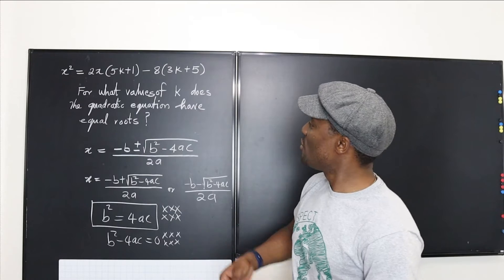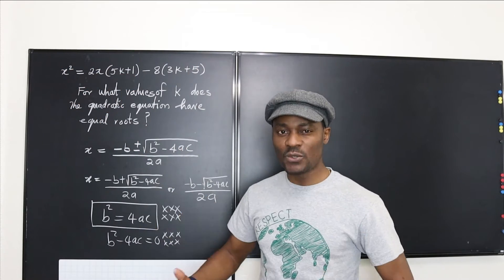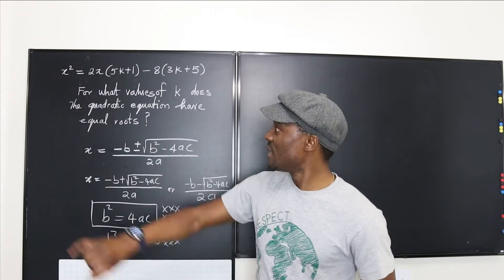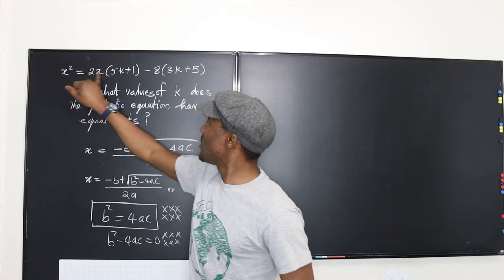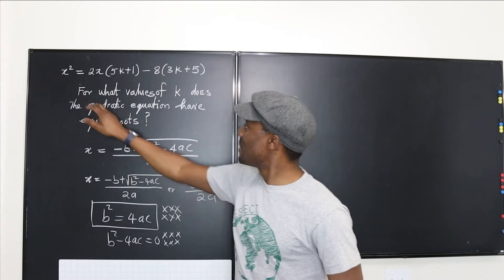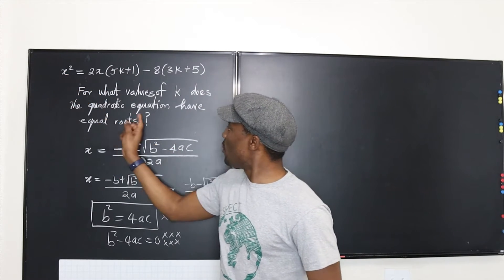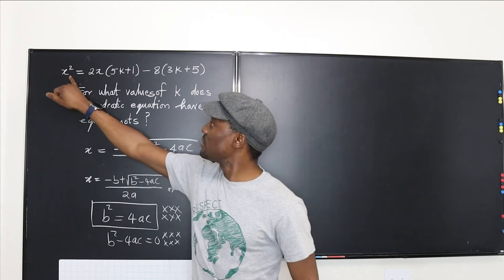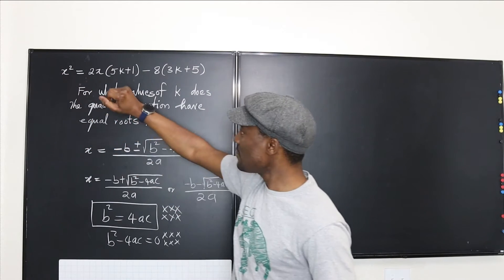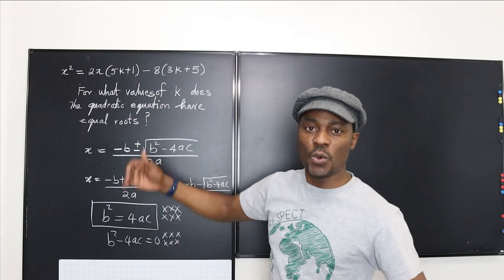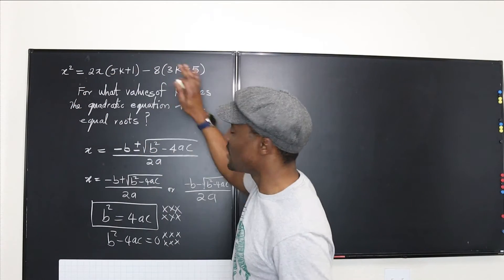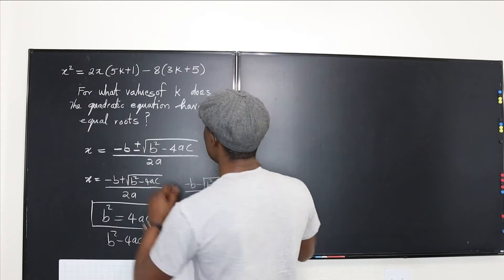First, we have to rewrite this quadratic equation in standard form. As you can see, there are two letters in the question: x and k. We know that k is a constant because that's what we're supposed to find. The roots are in terms of x, but k is a constant — we just want to know what values of k it will be. So let's rewrite this like a standard quadratic equation.